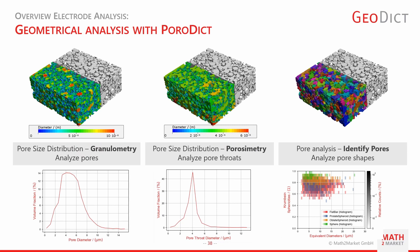Granulometry analysis fits spheres inside the pore space, giving an equivalent diameter for each pore, visualized with a color code — large pores in red, small pores in blue. This appears in areas with low cross-section between two active materials. The pore size distribution can be plotted as a graph, quickly characterizing electrode pore characteristics.